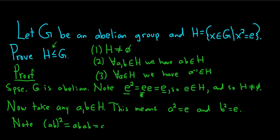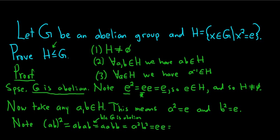Now this is equal to a·a·b·b, and this is because G is abelian — that's the key step, that's why we needed this hypothesis. Abelian means commutative. So a·a equals a squared and b·b equals b squared. Then a squared is equal to e and b squared is equal to e, and e times e equals e. So we've shown that (ab) squared equals e, which means AB is in H. Hence, H is closed under the group operation.